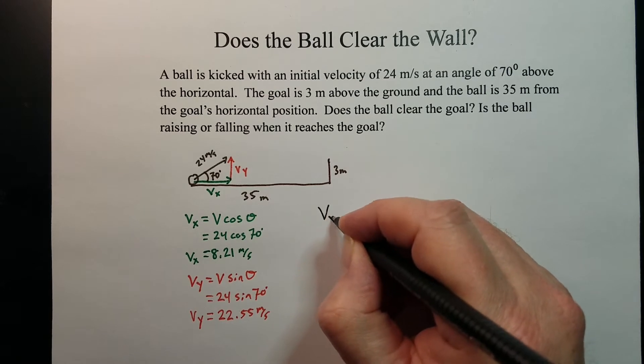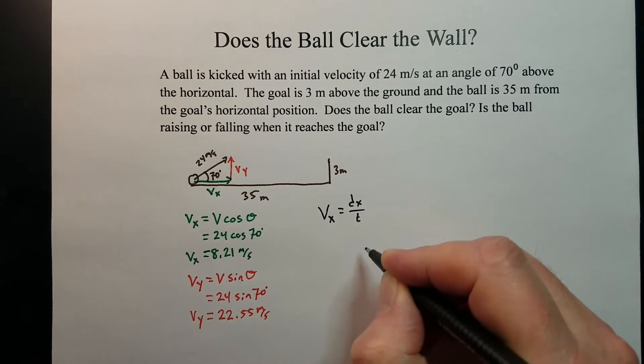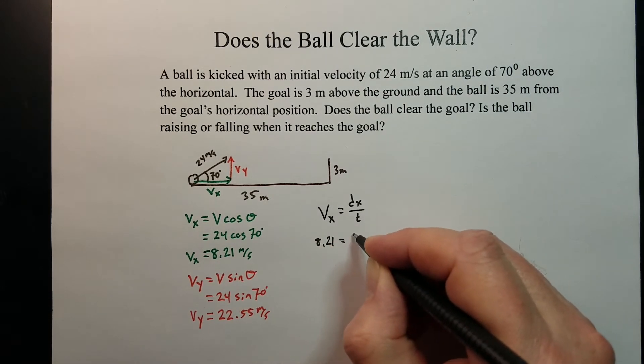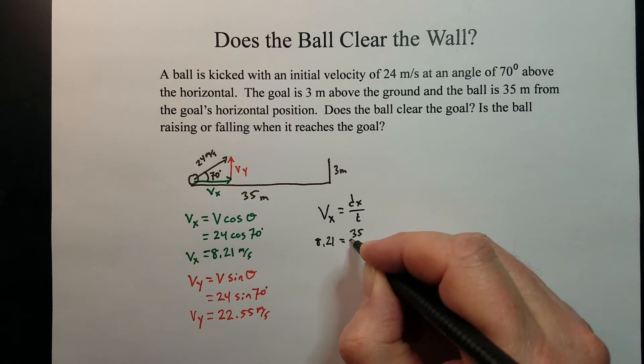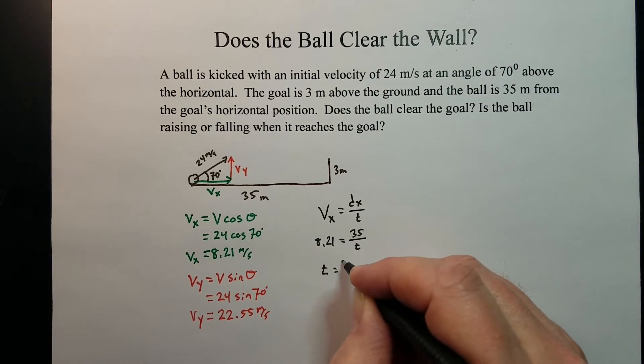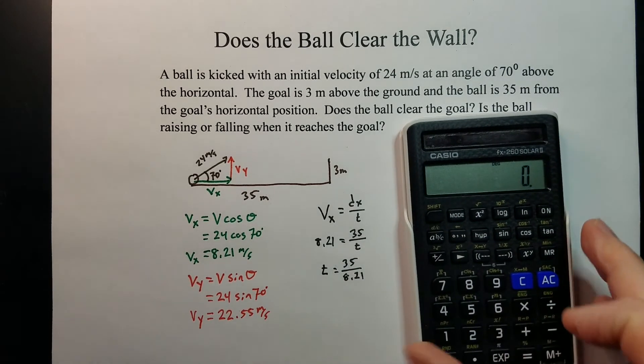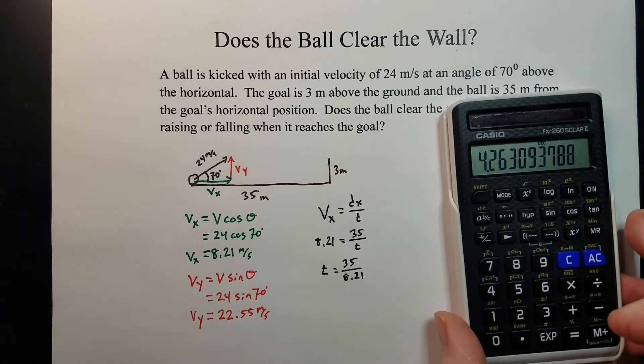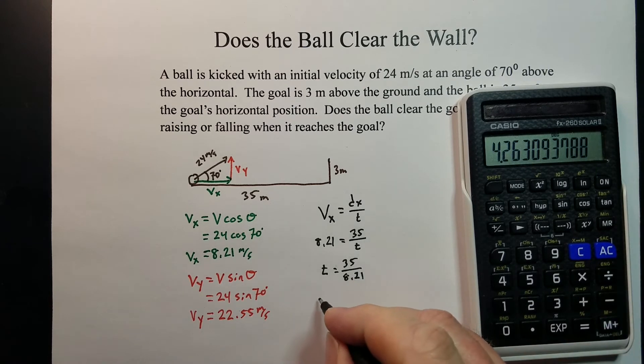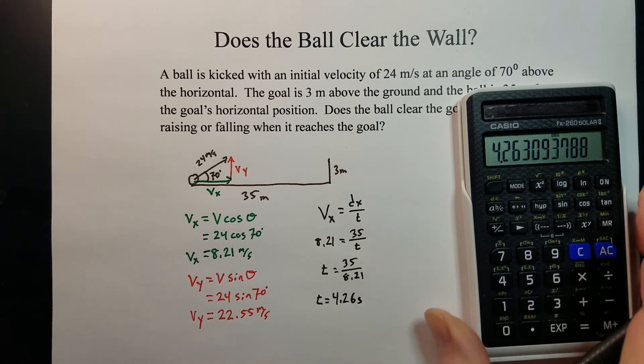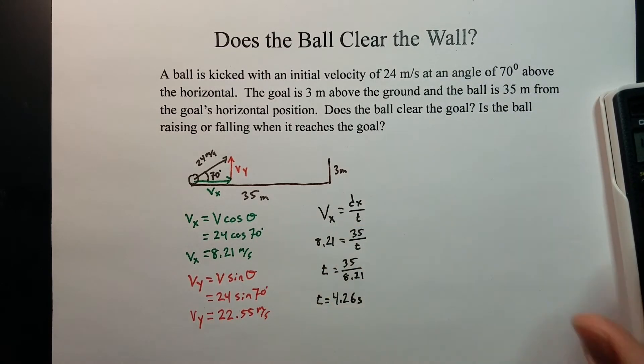So we can use vx equals dx over t. Velocity in the x is 8.21. Distance is 35 meters. And we want to figure out the time it takes to get out to that location. We get that it takes 4.26 seconds for that ball to get to that goal post or wall, whatever you want to call it.